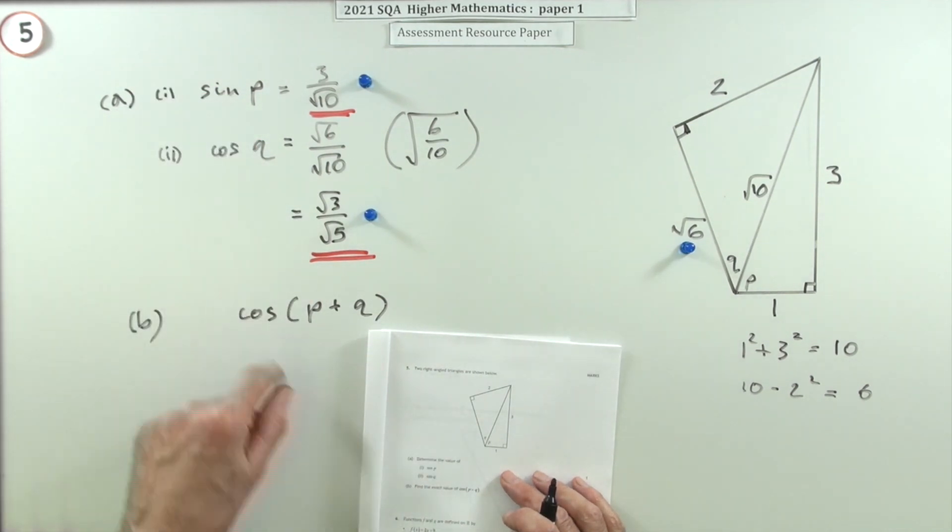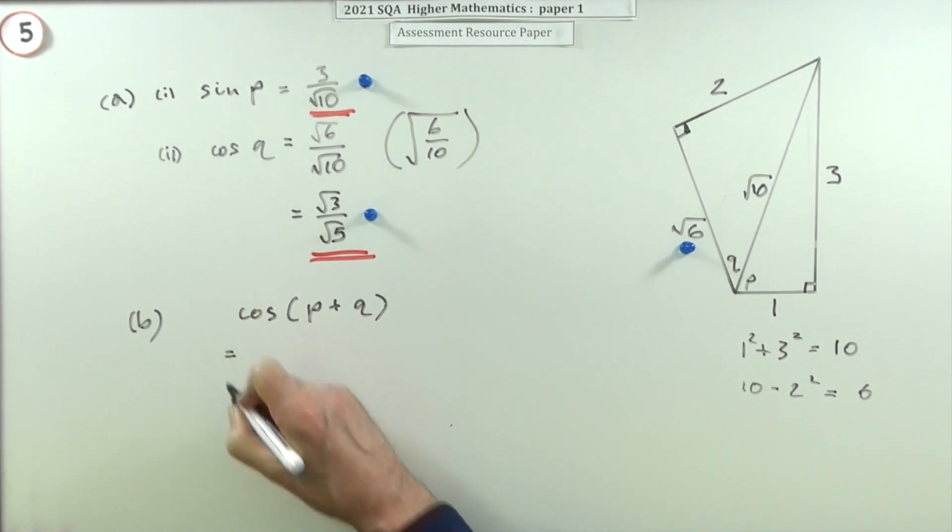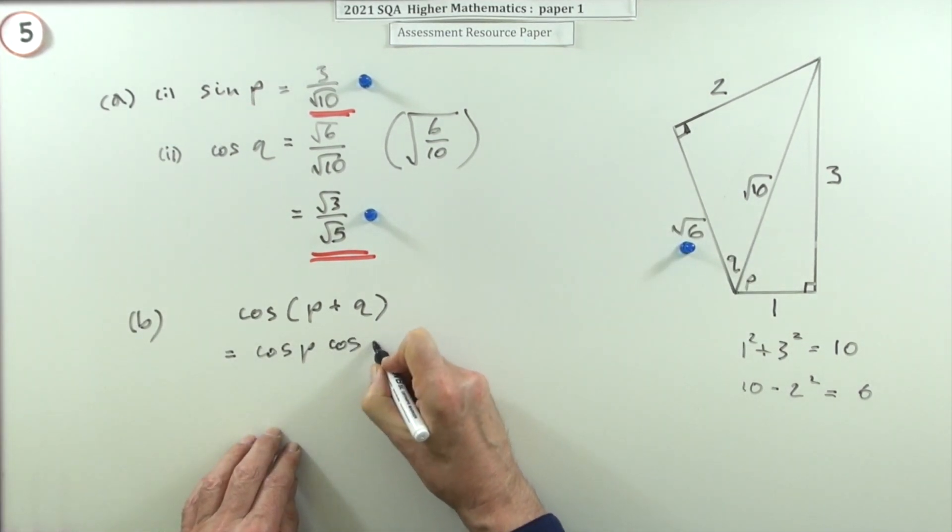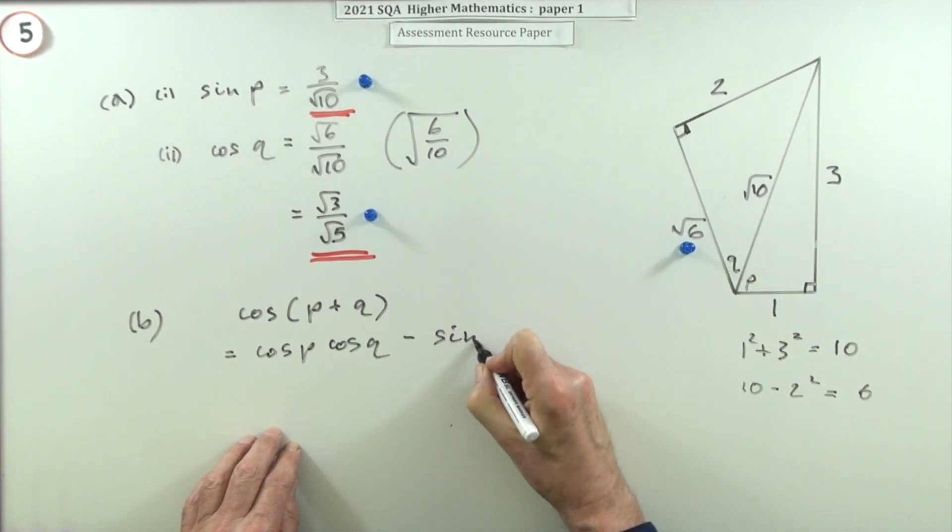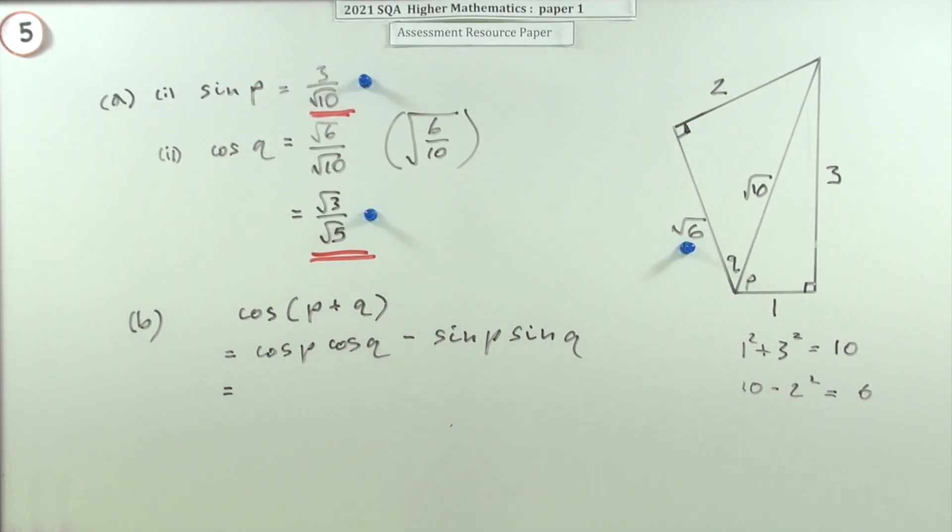The exact value means you have to use those formulae. The appropriate one - you just look up the front - is the one that goes cos cos minus sine sine: cos P cos Q minus sine P sine Q.